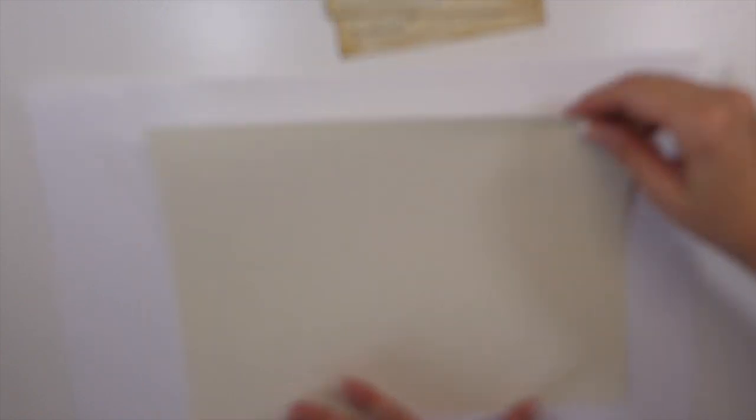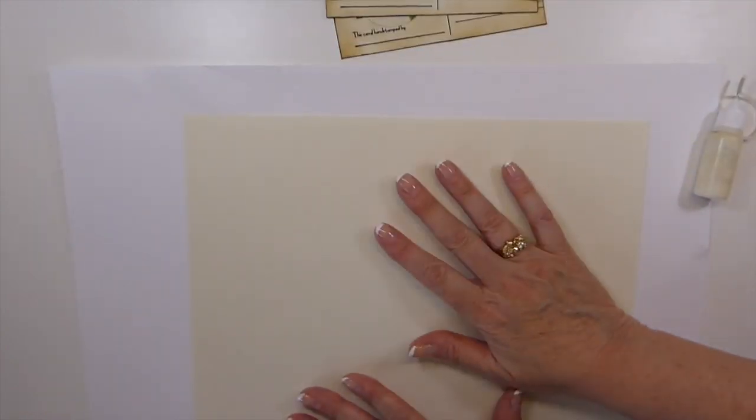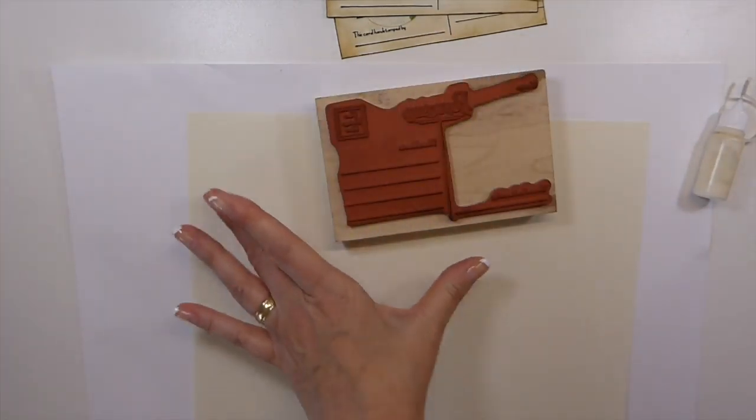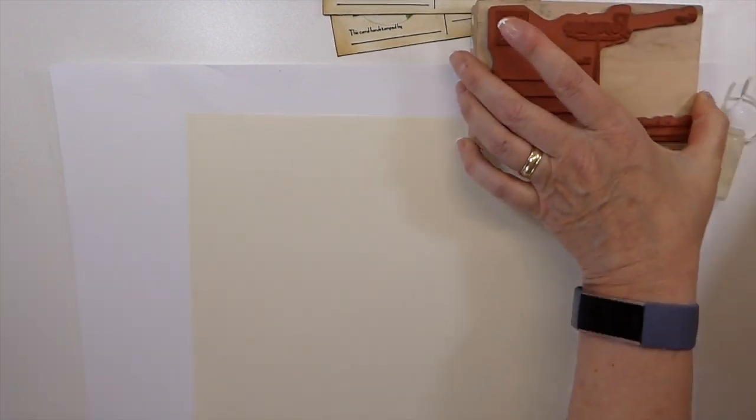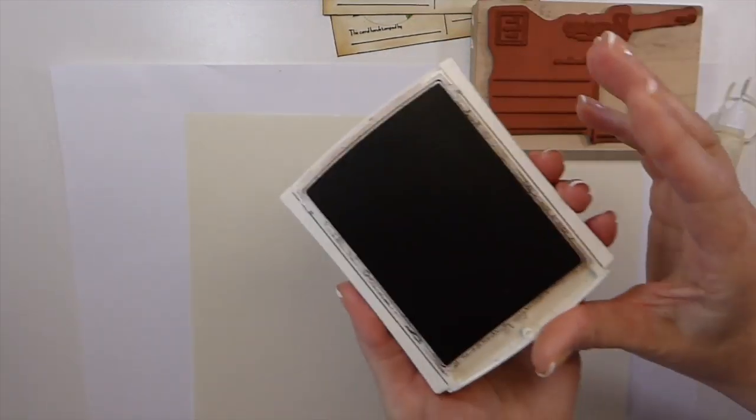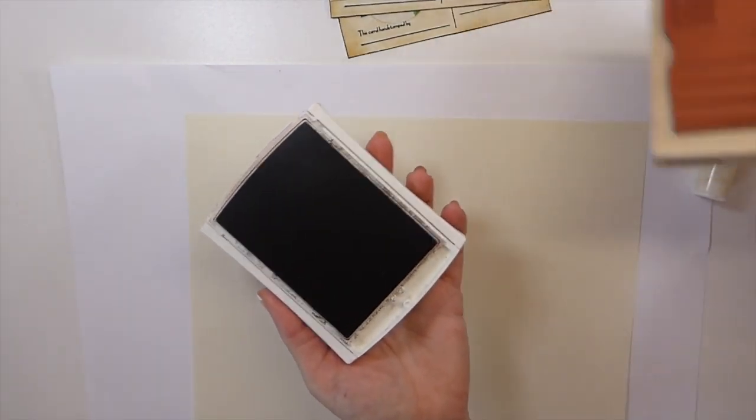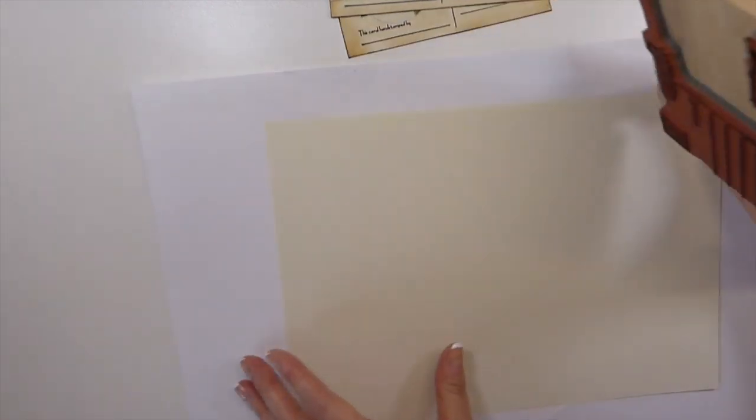The first thing I like to do, if you're stamping—now again if you're printing out the digital you're just going to have to skip this part—I like to go ahead and get my postcard stamp down. I've recently re-inked this stamp and I've found that I have to set the ink because it's just coming on really heavy, and last night when I did these I have some smudging, so you'll have to bear with me as I hit this with some heat.